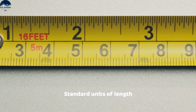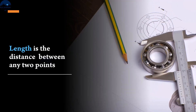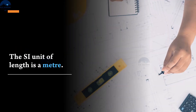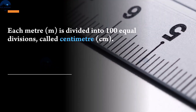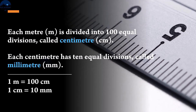Units of length: length is the distance between any two points. The SI unit of length is the meter. Each meter is divided into 100 equal divisions called centimeters. Each centimeter has 10 equal divisions called millimeters. Thus, 1 meter equals 100 centimeters, and 1 centimeter equals 10 millimeters.